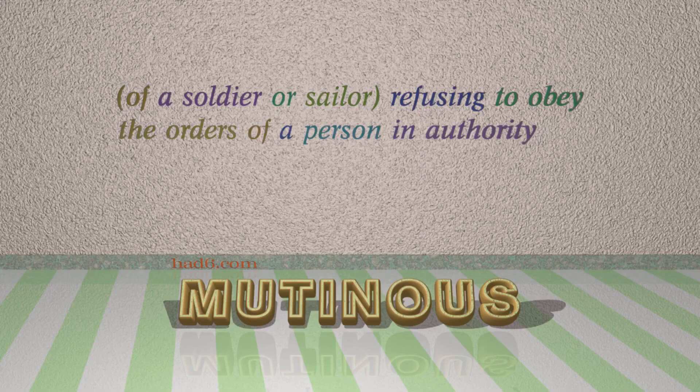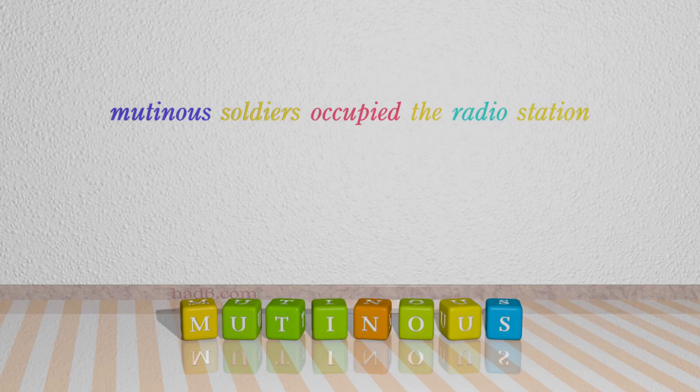Number 3: Mutinous, which means of a soldier or sailor refusing to obey the orders of a person in authority. For example: Mutinous soldiers occupied the radio station.